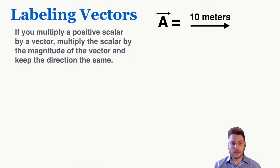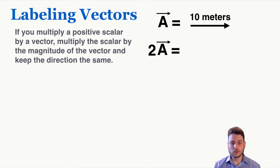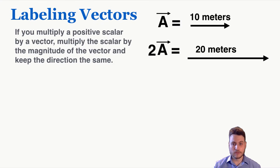If you multiply a positive scalar by a vector, multiply the scalar by the magnitude of the vector and keep the direction the same. For example, if I multiply vector A by 2, that means I'm multiplying the magnitude by 2 but keeping the direction the same. So 2 times vector A equals 20 meters in the same direction, and the vector is now twice as long.